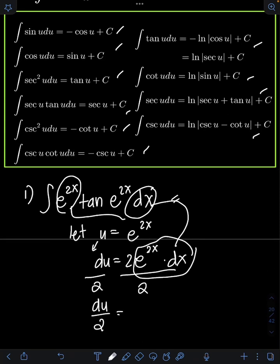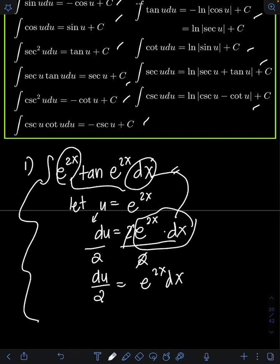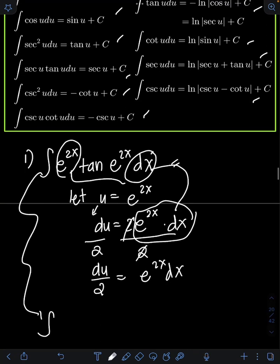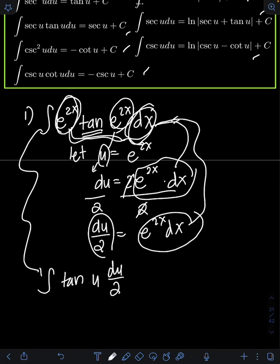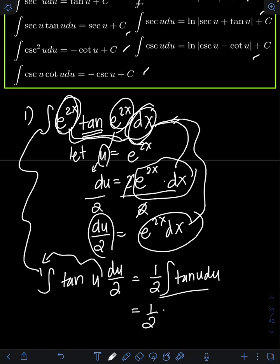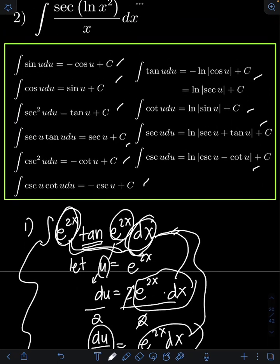So we have du/2 = e^(2x) dx. Substituting into the original integral, we get the integral of tan(e^(2x)), which is now tan(u), and e^(2x) dx becomes du/2. The constant 1/2 can be placed in front of the integral, giving us (1/2) ∫ tan(u) du.